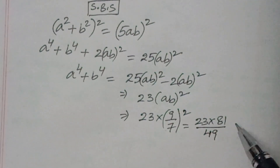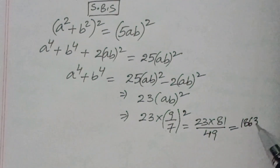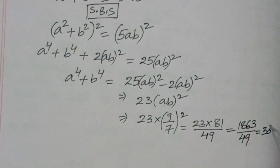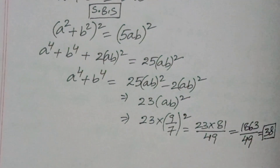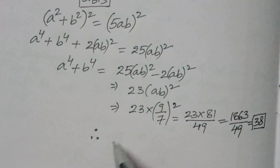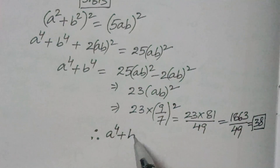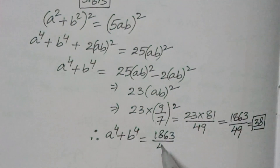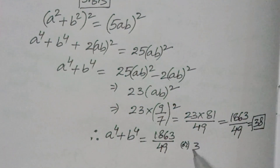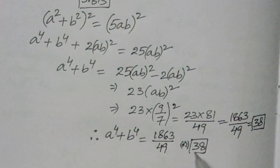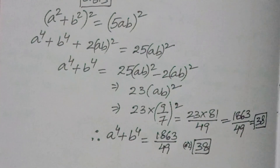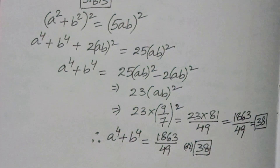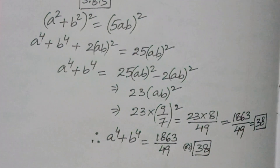So we get 1863/49, which is approximately 38. Therefore, a to the power of 4 plus b to the power of 4 equals 1863/49, or approximately 38. I hope you understood the video. Thank you for watching Ion CG Max. If you like the video, subscribe to the channel and share it with your friends. Thank you for watching.